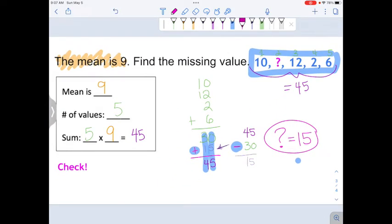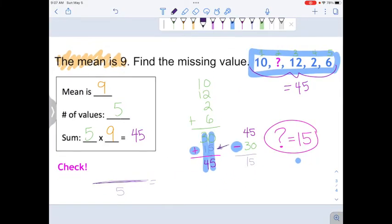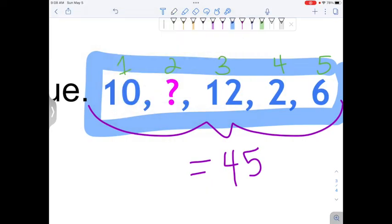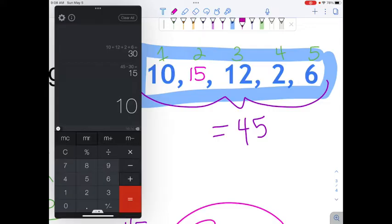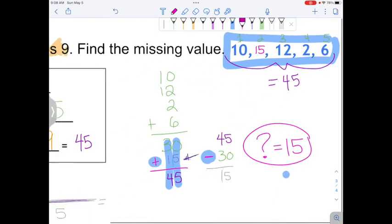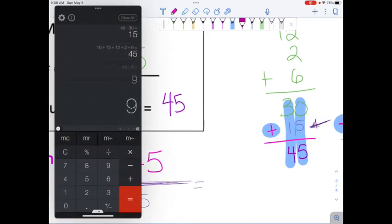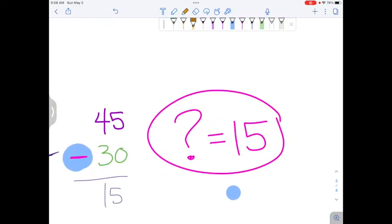But we should check our answer as well. So do you see down here where it says check in the bottom left-hand corner? To find the mean, we're supposed to add up all the numbers in the list, and then divide by how many there are. So we already know that we're dividing by 5. And all the numbers in the list, remember how we said question mark is 15? So now, let's just write that right over the top. So let's add up all those numbers. 10 plus 15 plus 12 plus 2 plus 6 is 45. And is 45 divided by 5 equal to 9? Yeah! That means we did get a mean of 9. So our missing number really was 15.